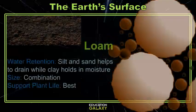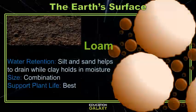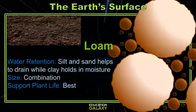When you have a perfect mixture of all of these, you have loam. The clay is able to hold in all of the moisture, while silt and sand help to drain. It's the best for plant life, and the organic matter inside of the humus helps give plants all of the vitamins and minerals that they need. Let's stop and look at some questions.